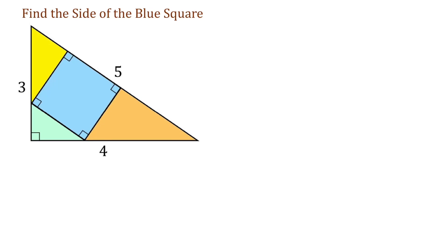Hello! In this figure, we have a square inscribed in a right triangle with the sides of 3, 4, and 5 units. We need to find the side of the square.